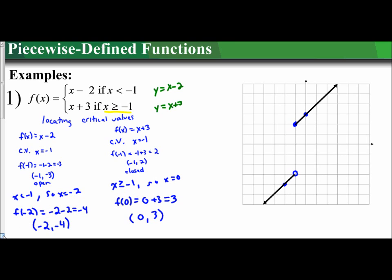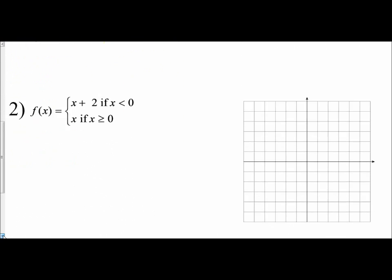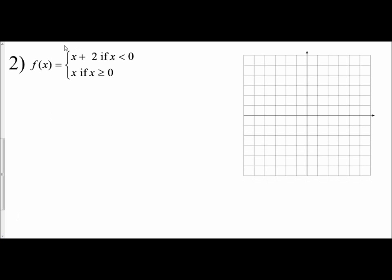Let's try one more example. This function is defined as x plus 2 if x is less than 0, and as x if x is greater than or equal to 0. Those are two expressions based off of our conditions. Working with f of x equals x plus 2, we identify our critical values. Both conditions are based off of x equals 0, so that's our boundary and starting point for both.